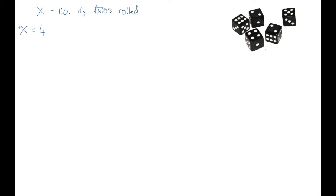Let's suppose that we have five dice and we want to know the probability that when we roll all five of them, four of them will be twos. Let's start by defining our random variable — let's call it X — and we'll say X is the number of twos rolled. We want four of them to be two. So let's look at all the different ways we could get this outcome.